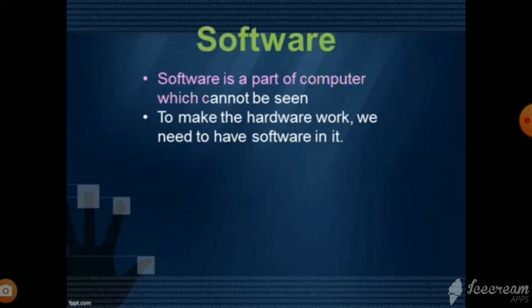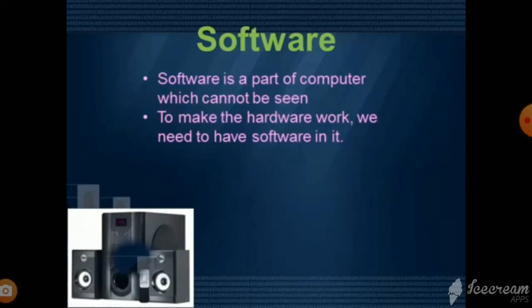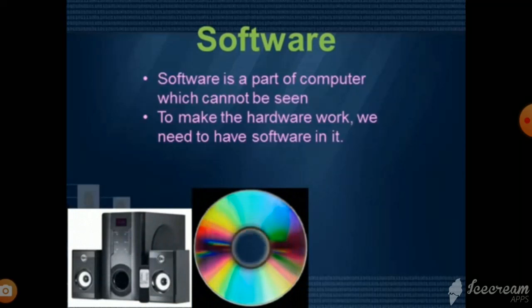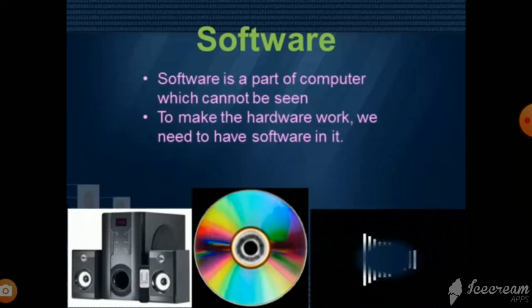Software. Software is that part of a computer which cannot be seen and touched. To make the hardware work, we need to have software in it. Let us understand software with the help of some examples. Children, all of you must have seen and used a music system. The parts like speakers, CD, and DVD which you can touch and see are hardware. Can you see the songs or music recorded on a CD or DVD? No, because that is software. A CD is hardware, but the songs or movies which are stored in it are software, as they cannot be touched and seen.